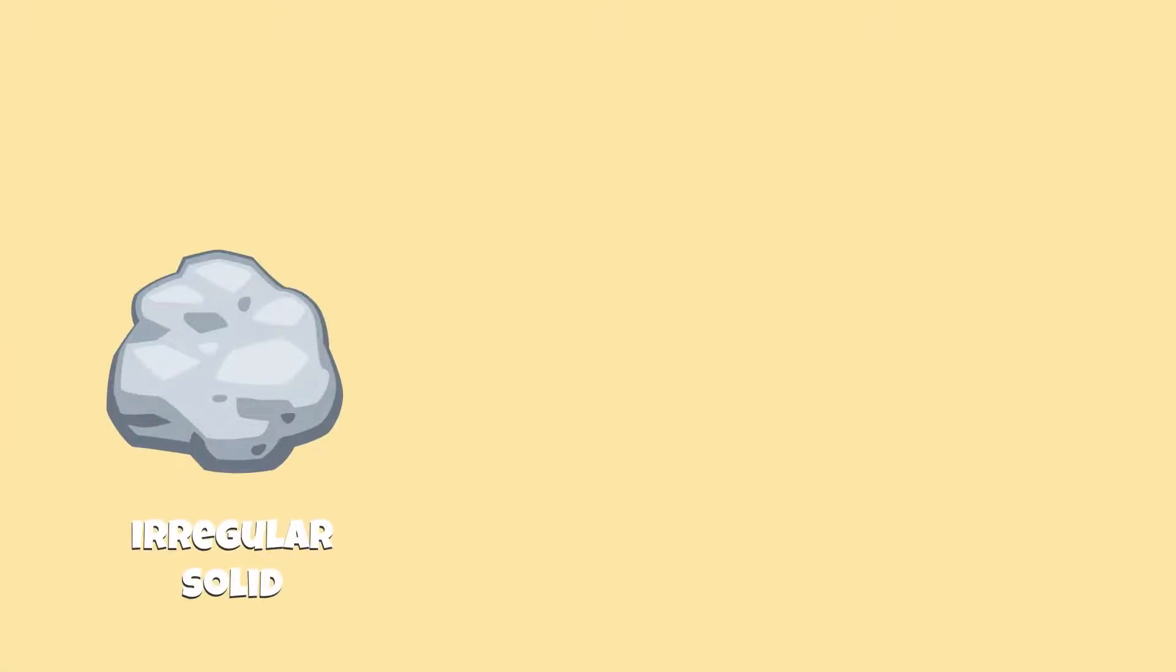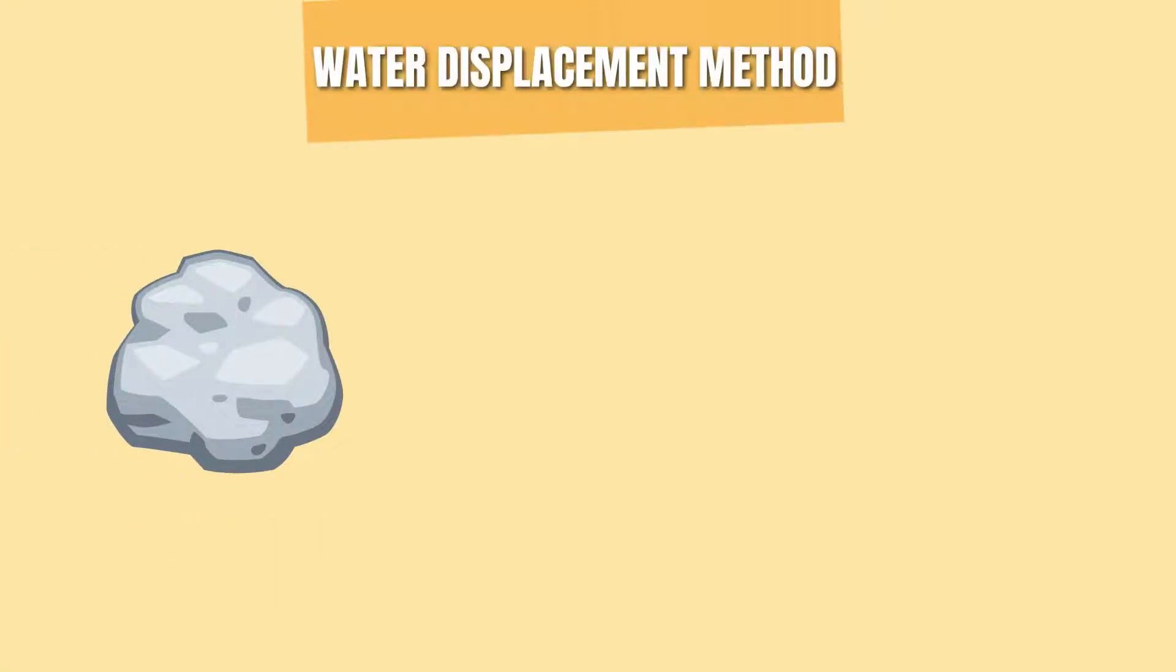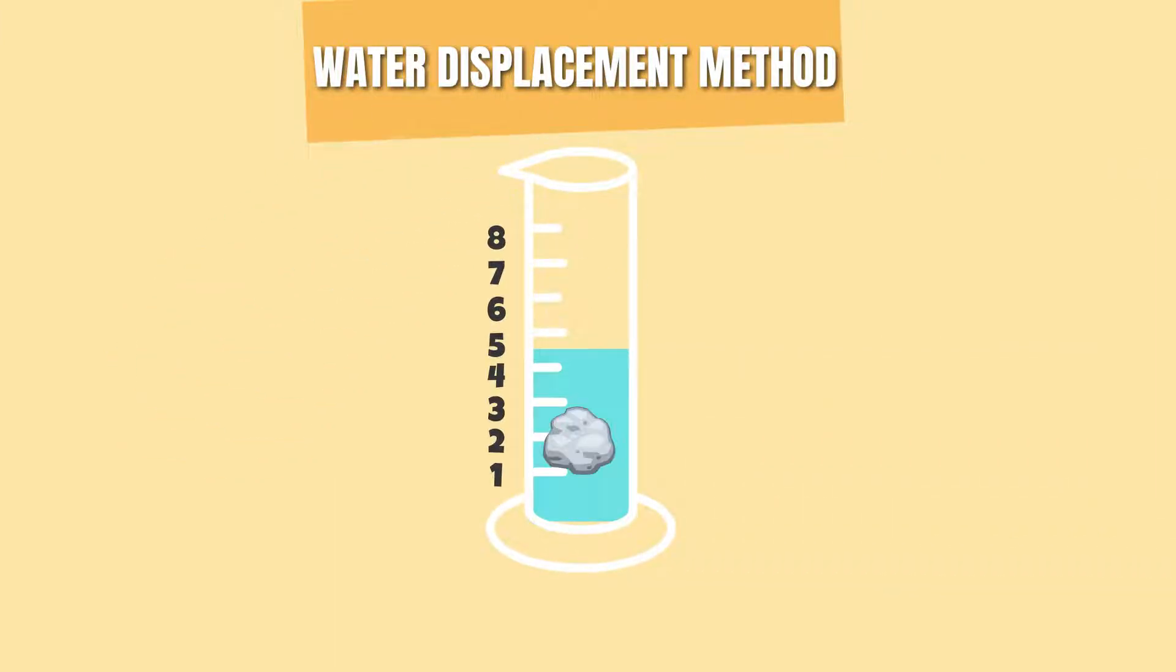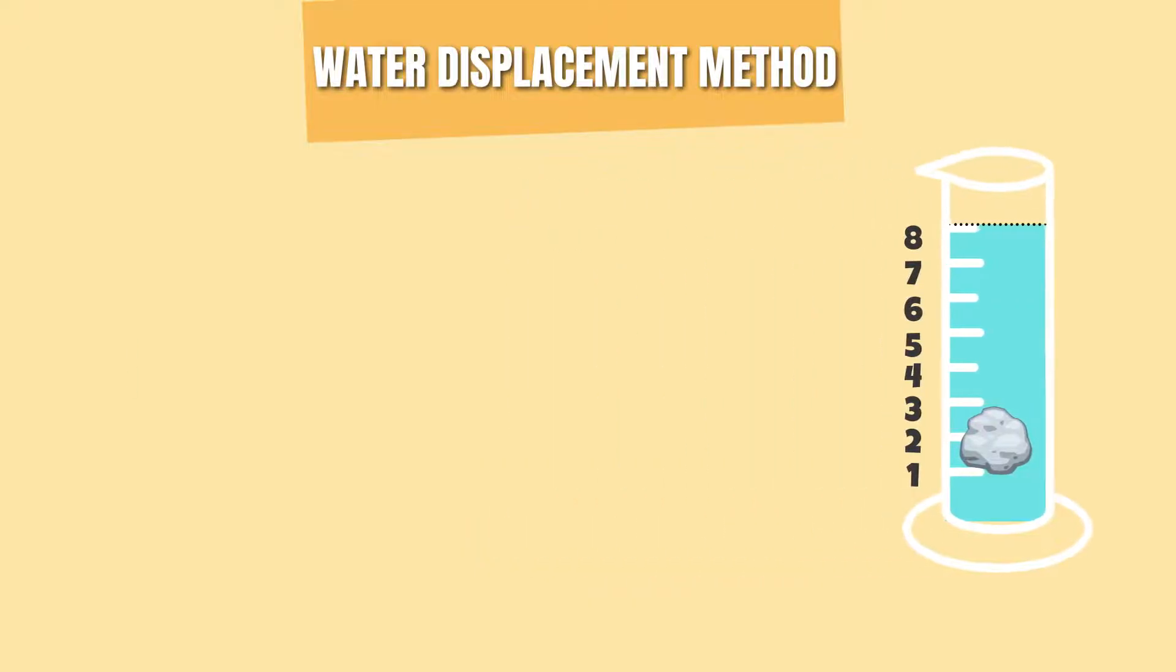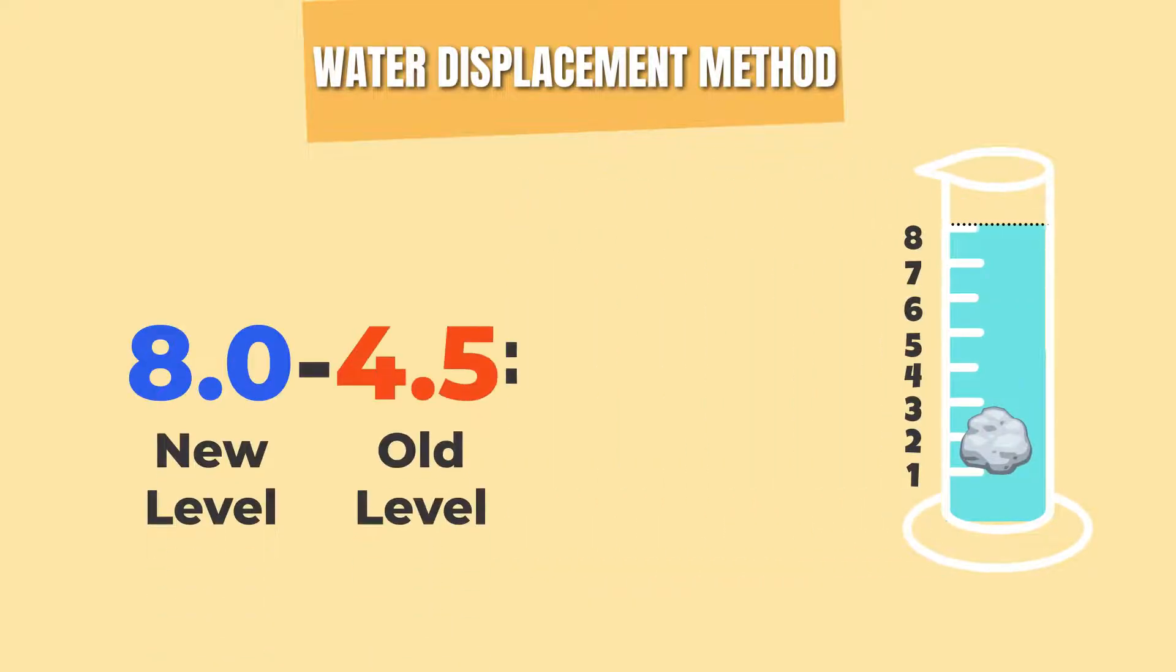If the sample is an irregular solid, use the water displacement method. Pour some water into a graduated cylinder and note its volume. Then, place the sample inside the cylinder and notice how much the water level rises. Finally, subtract the new water level from the old water level to find the volume.